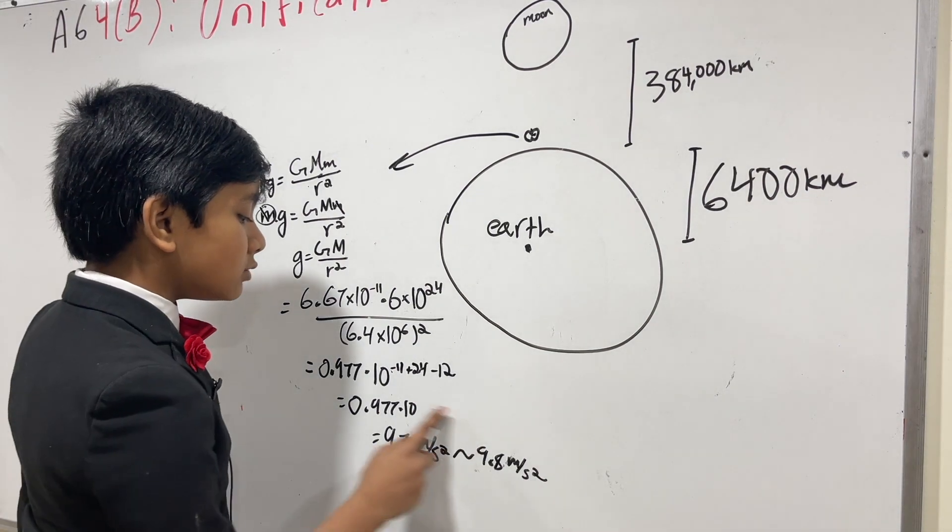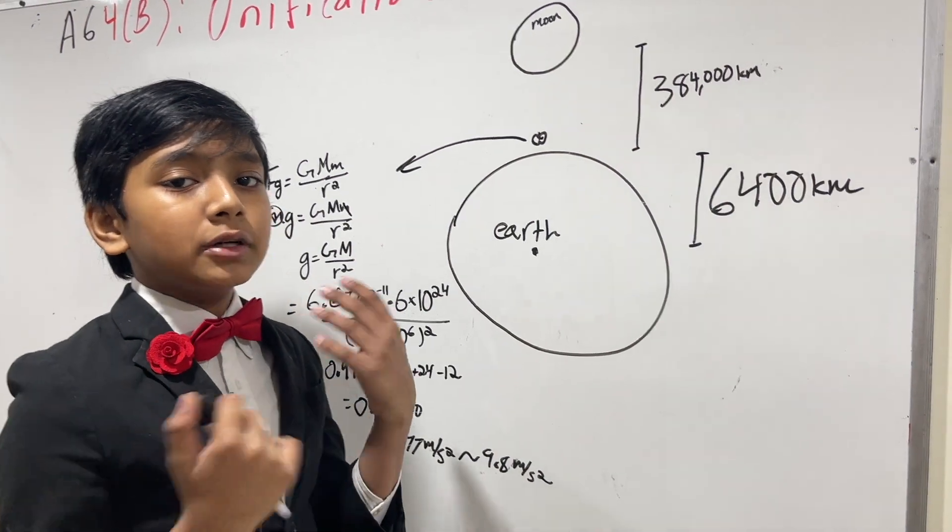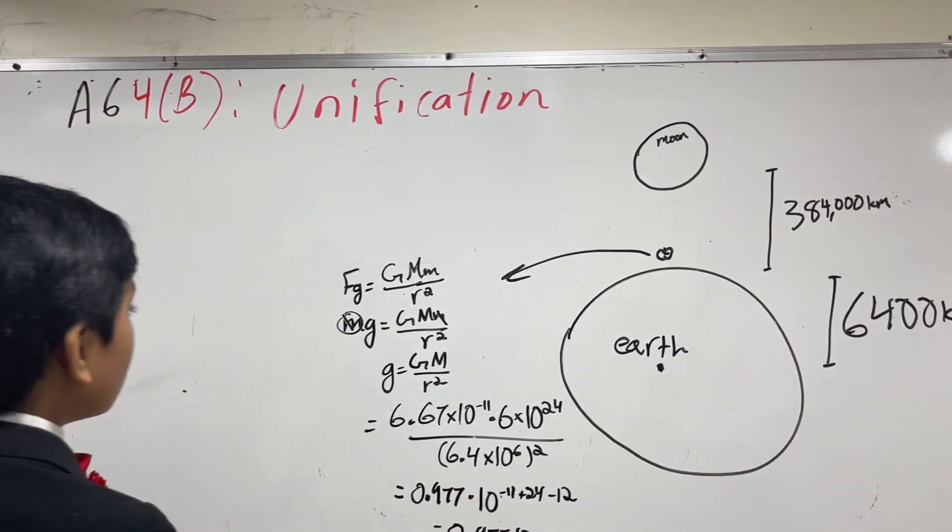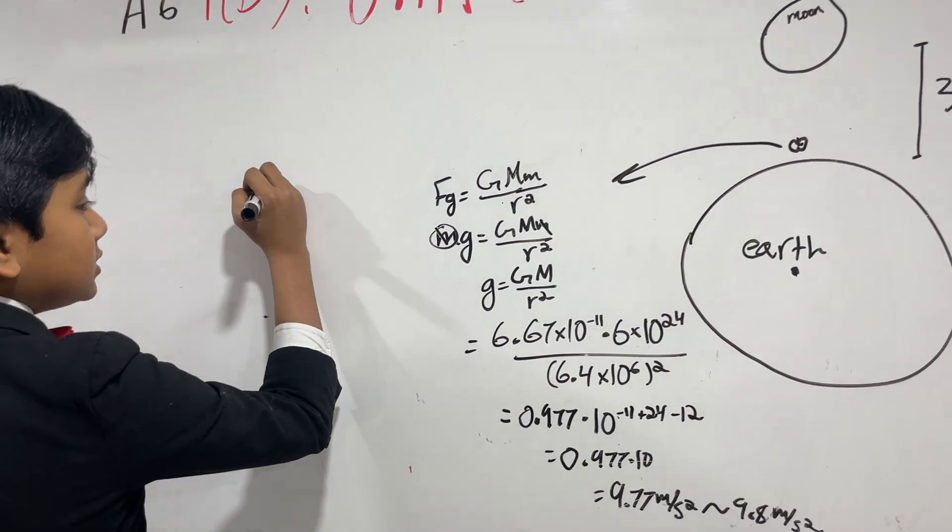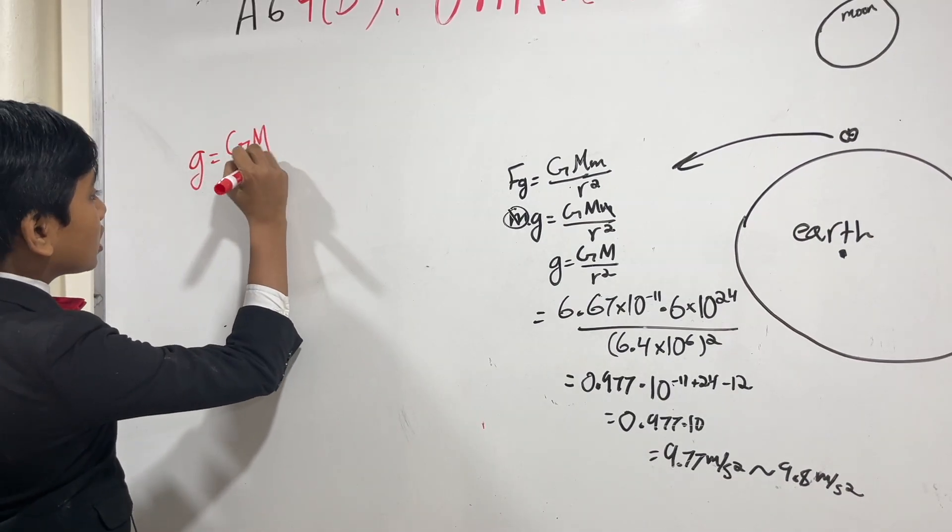So that was a pretty close estimate. But now, let's try and find how much the moon is accelerating. So if we wanted to find the moon's acceleration, g is equal to GM over r squared.